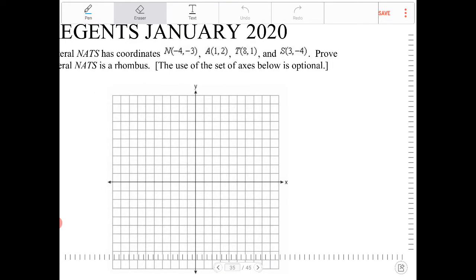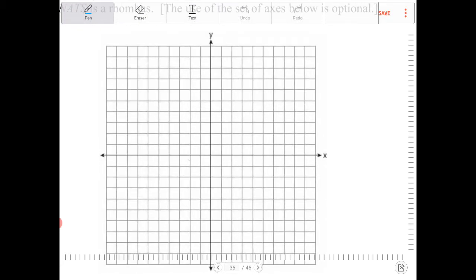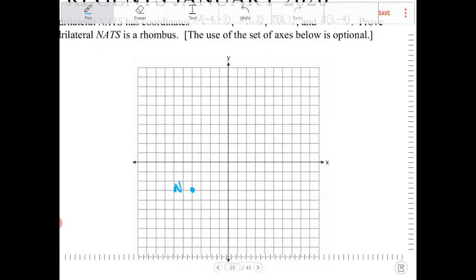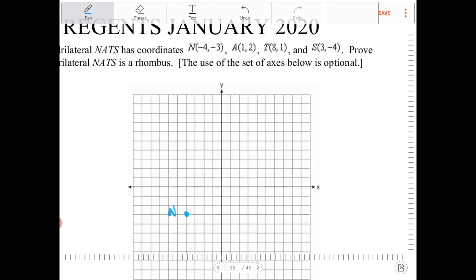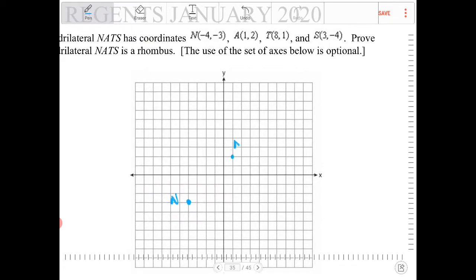So N is negative four, negative three. So negative four, negative three is going to be over here, negative four, negative three. So that's N. And then A is 1, 2, which is right here. That's A.